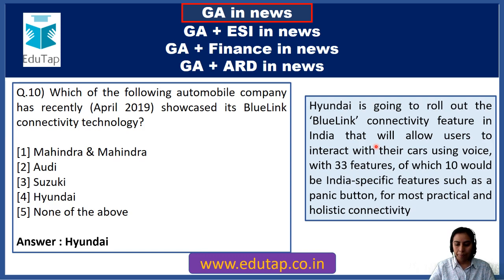Question 31: Who among the following has been recently awarded the CII Women Exemplar Award for 2019? All three options — Bhimavva, Van Lal Ruati, and Neelima Tigga — have actually won this award. Bhimavva received it for the education sector, Van Lal Ruati for the health sector, and Neelima for micro-entrepreneurship.